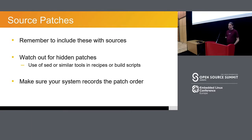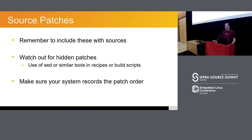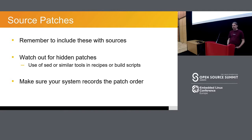You need to capture patches to the source code. If you're pulling something like BusyBox and patching it, you need to capture your patches as well for things that are copyleft licensed. Watch out for hidden patches — things that aren't called a .patch file but also modify the source code. If you've got a script that calls sed and does some transformation on source files, that's just a patch under a different name. You also need to make sure you've got a copy of that in your license compliance archives. Make sure the system records the patch order — don't just give someone a directory of 30 patches without saying what order they get applied in.